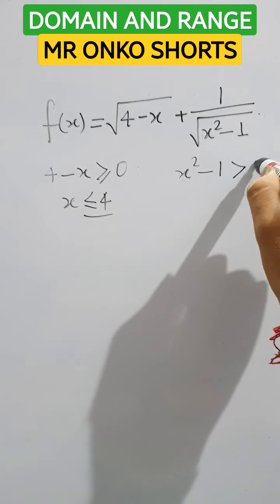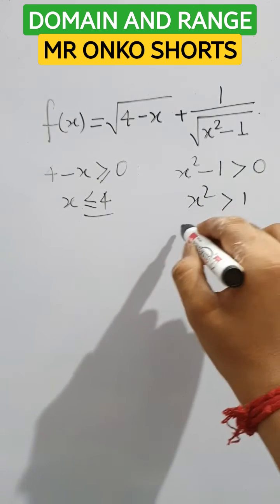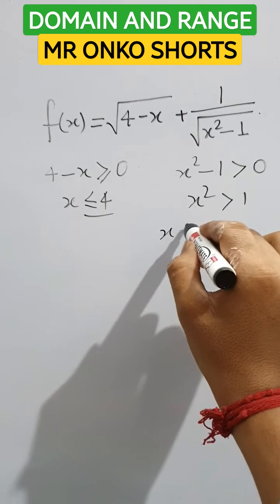must be only greater than 0. So x squared is greater than 1, which means x is greater than 1.